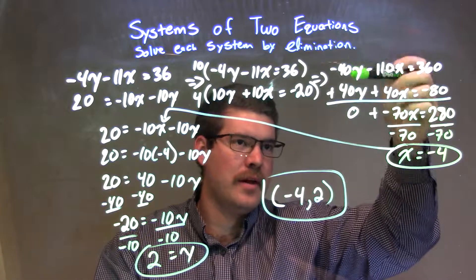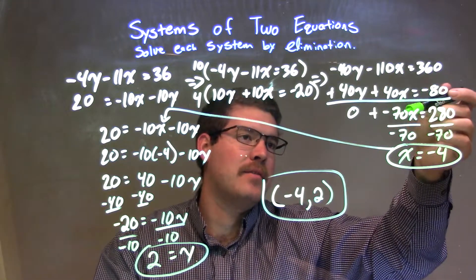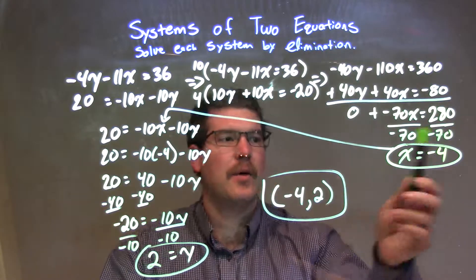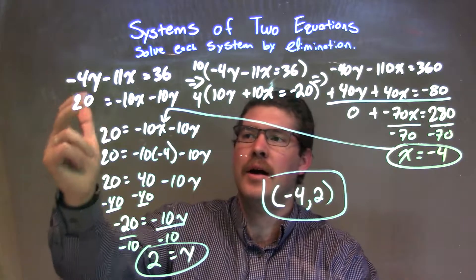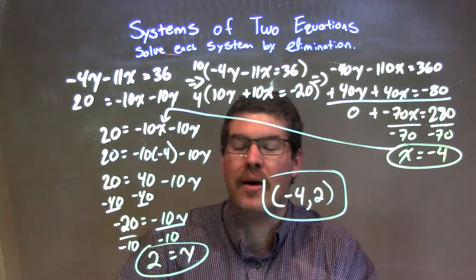When I added the two equations together, it eliminates the y, and I got negative 70x equals 280. Simplifying, I got x to be negative 4. I plugged that negative 4 back into my second equation. I could have done either one. I chose the second equation, and when I simplified, I got y to be 2.